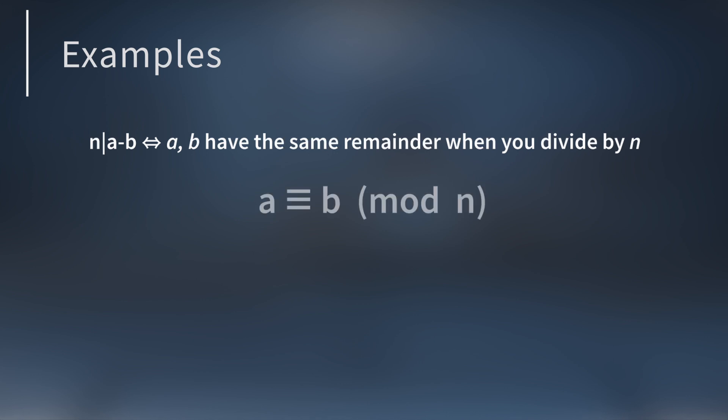Some people will define a is congruent to b mod n as saying a and b have the same remainder when you divide by n, while others will define it to mean n divides a minus b. Both definitions are fine. They mean the same thing.